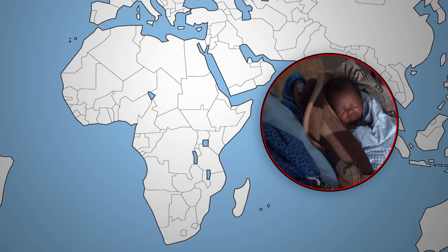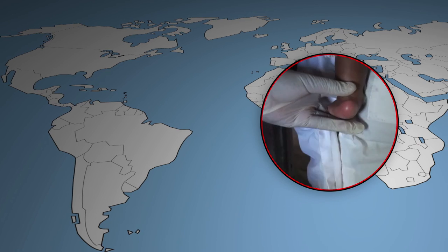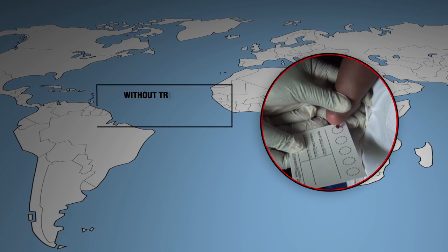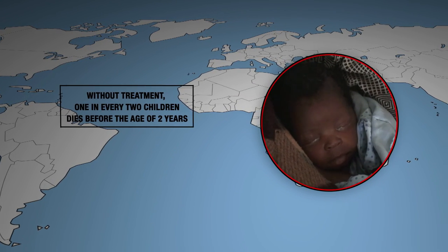Children living with HIV are also at a disadvantage. In 2012, only half as many children received treatment as adults. And without treatment, one in every two children dies before their second birthday.